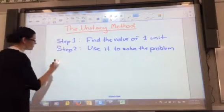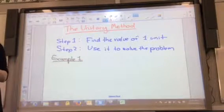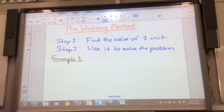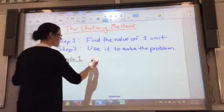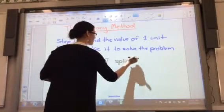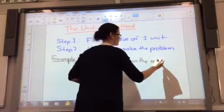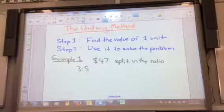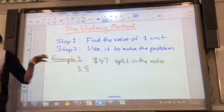So our first example. We have done the unitary method with percentages. What we're going to do is the same method but with ratios and with rates. So we're going to start with a ratios question, a really simple example. In this example we have $47 and it's split. We want to work out what the 3 and the 5 are.